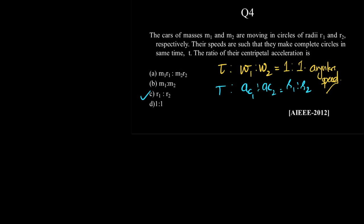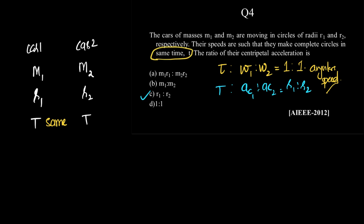Let's understand the concept in detail. We have car 1 with mass m1 and radius r1, and car 2 with mass m2 and radius r2. Both have the same time period T, as given. We want to find the centripetal accelerations ac1 and ac2.